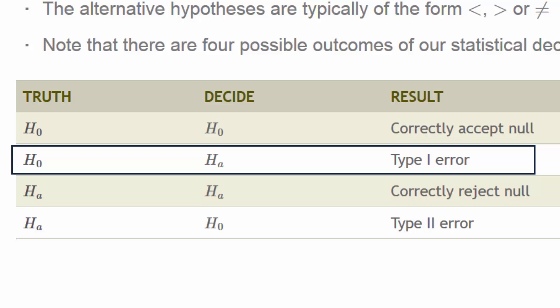If the truth is H₀ and we decide Hₐ, then we've made what is called a Type I error. In the version of hypothesis testing we're going to present, we'll control the probability of a Type I error to be small.